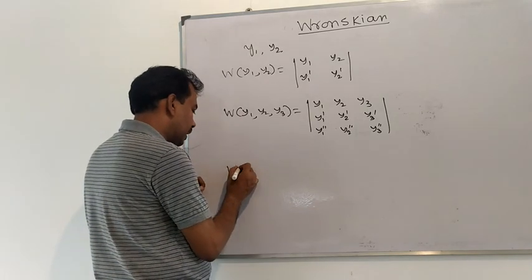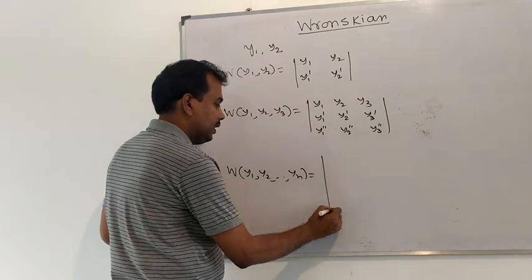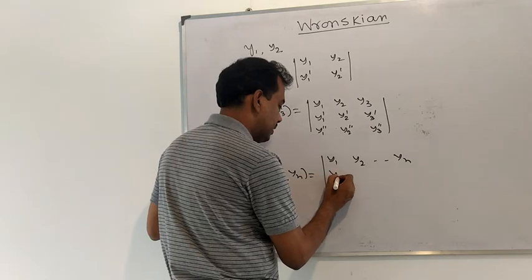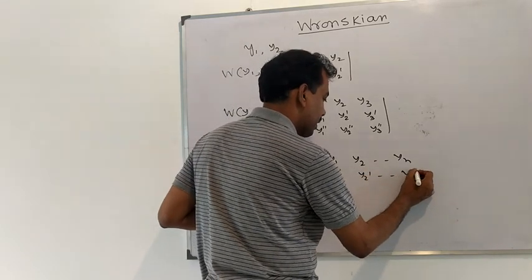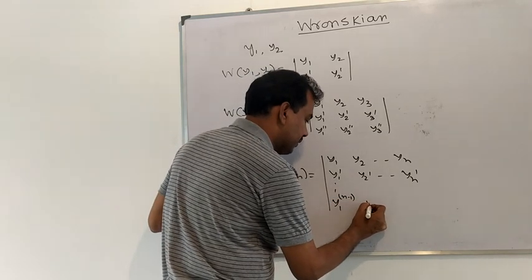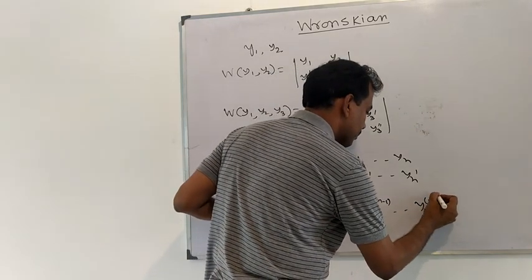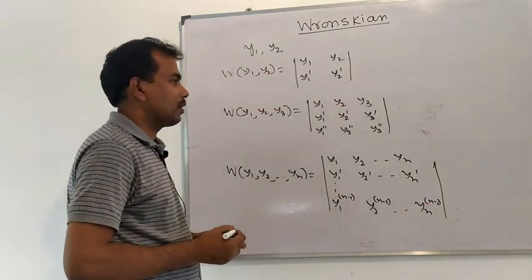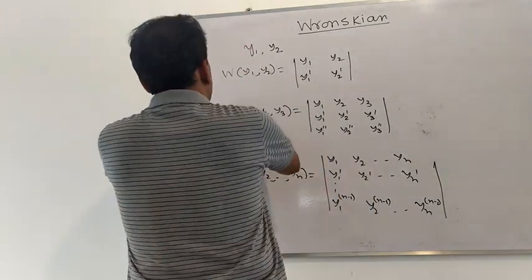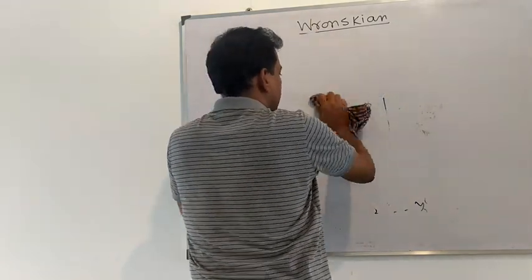Similarly, the Wronskian of n functions y1, y2, ..., yn is defined by an n×n determinant: the first row is y1, y2, ..., yn; the second row is their first derivatives; and the nth row is their (n−1)th order derivatives. We now look at important results relating to the Wronskian.